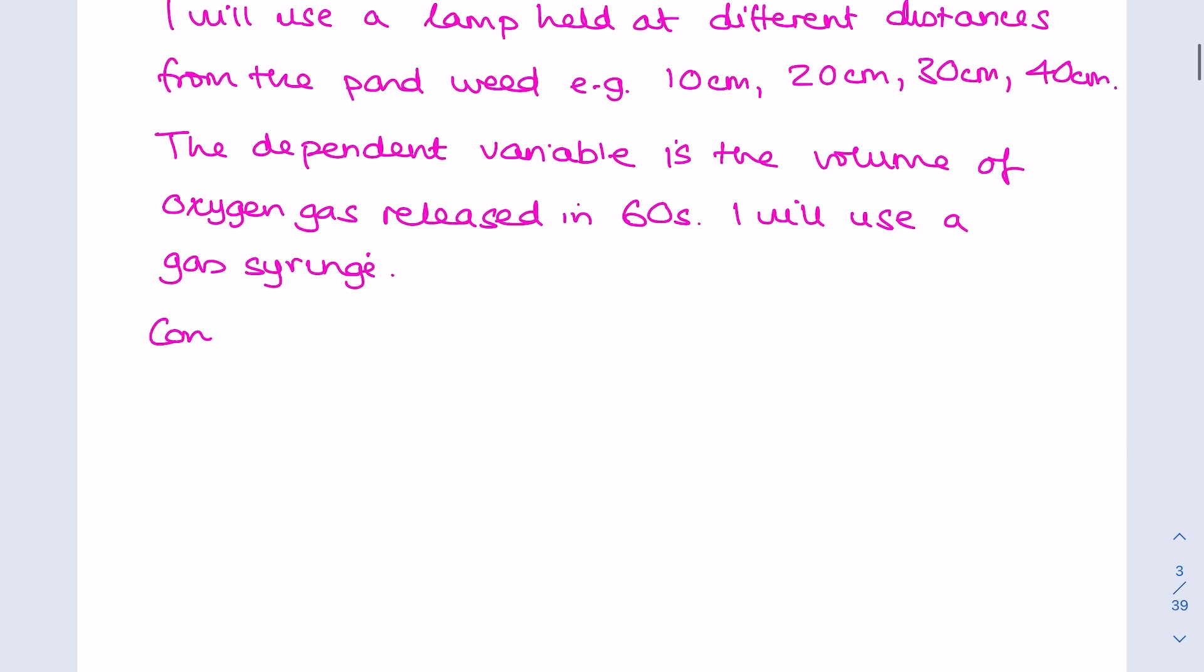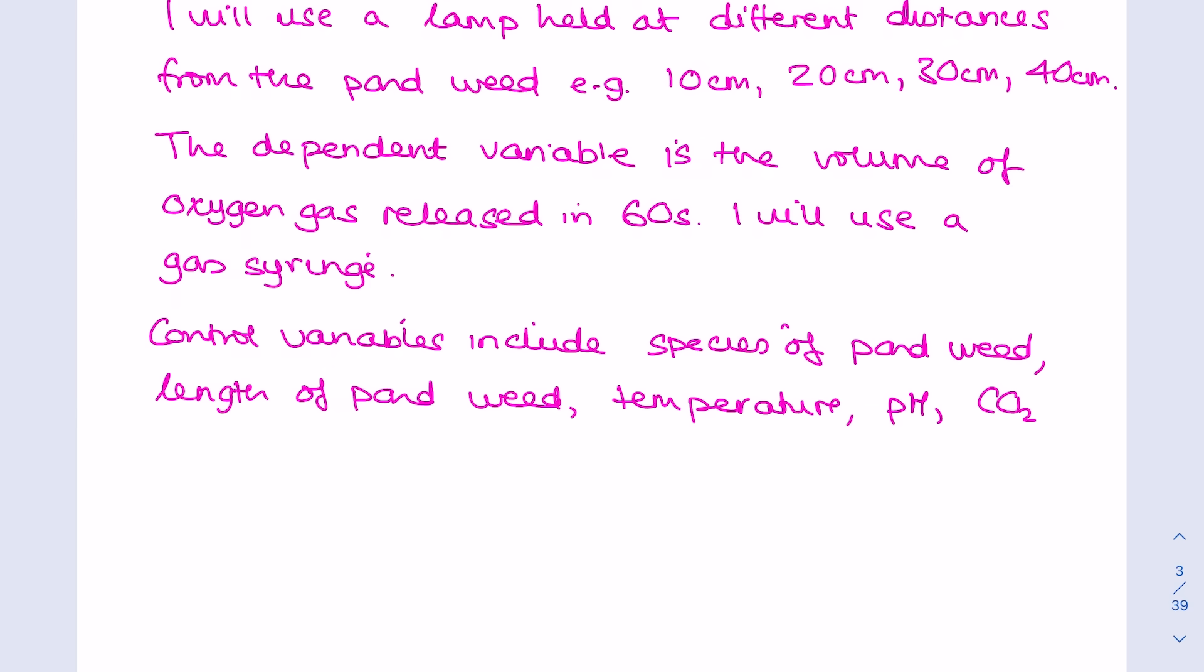How about my control variables? So what am I keeping the same? Species of pondweed, the length of pondweed because obviously shorter lengths will photosynthesize less, temperature, pH, carbon dioxide concentration.